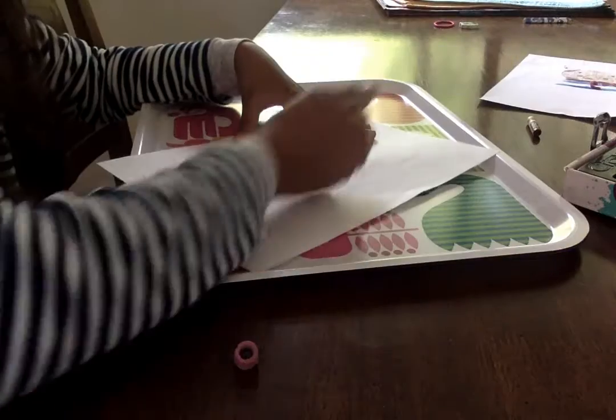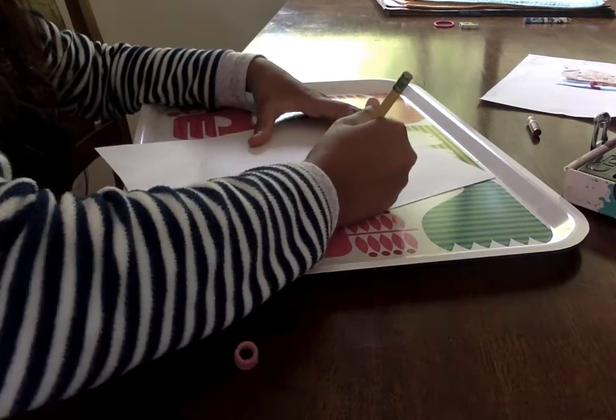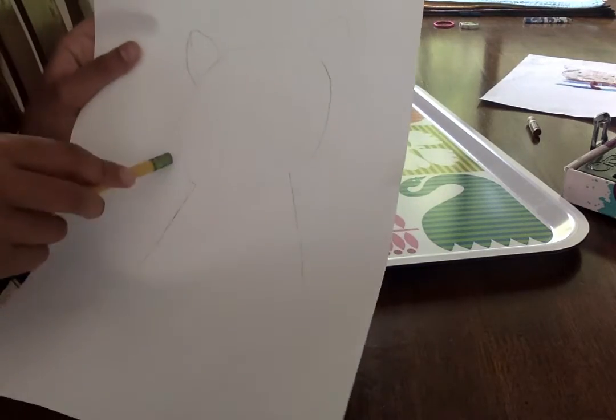Now draw the body, which will be two lines descending from the opening in your circle.